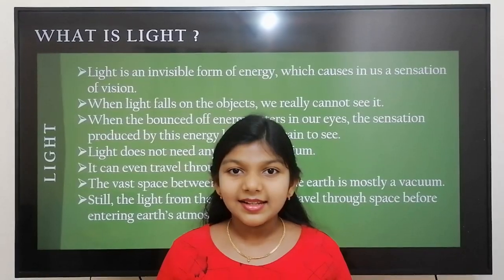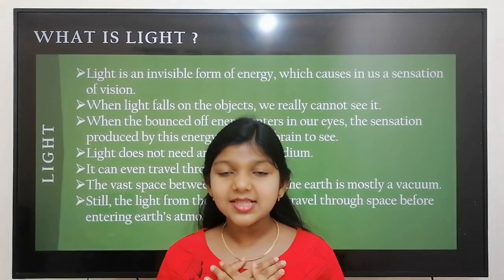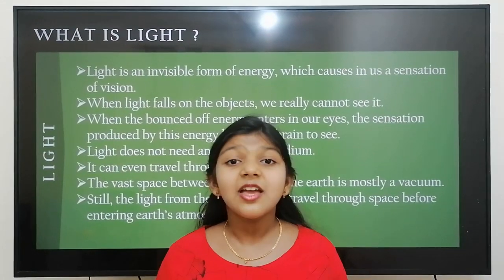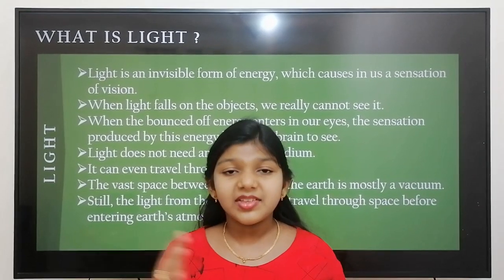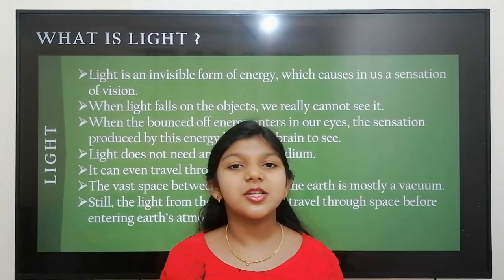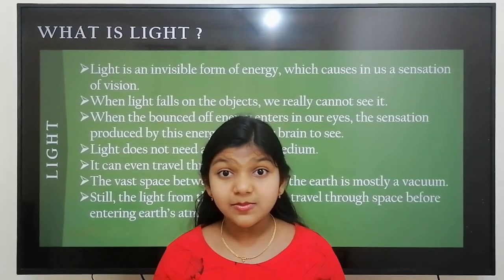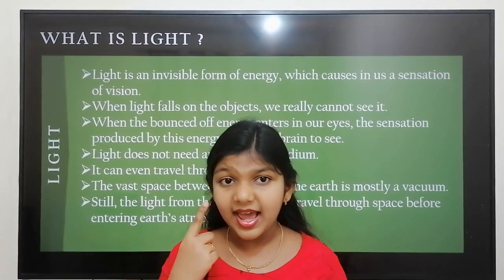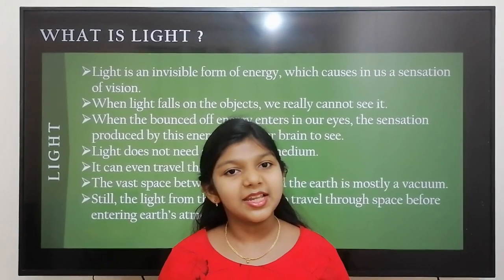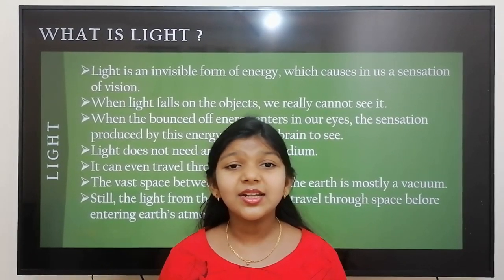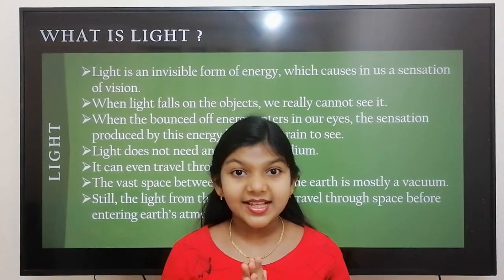Light is an invisible form of energy which causes in us a sensation of vision. When light falls on an object, we cannot see it directly. When the light bounces off from the surface of the object and enters our eyes, the sensation produced by this energy helps our brain to see. Light does not need any material medium — it can even travel through a vacuum.